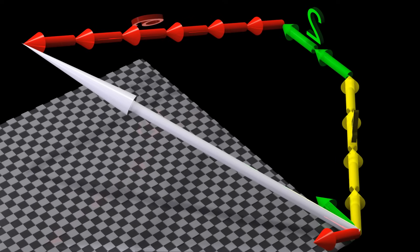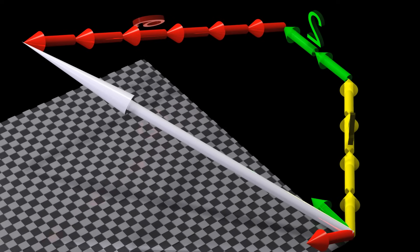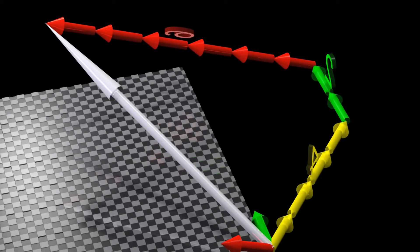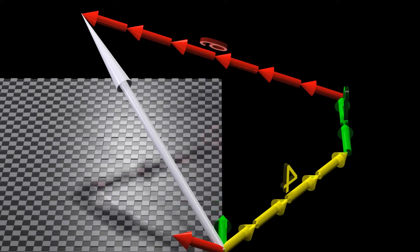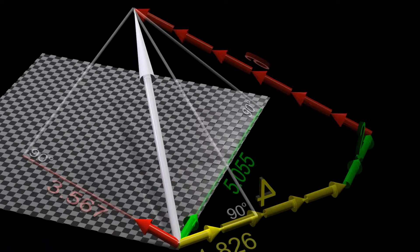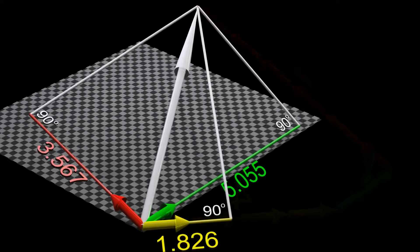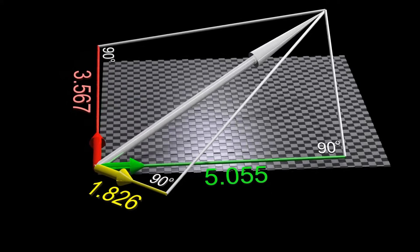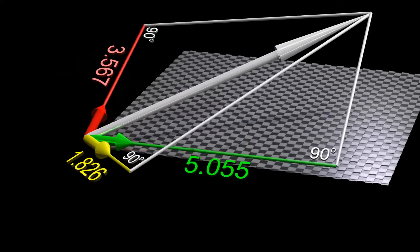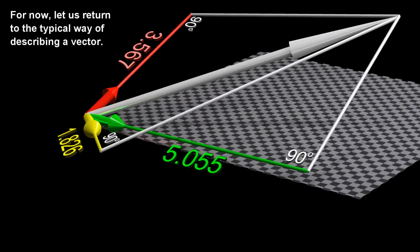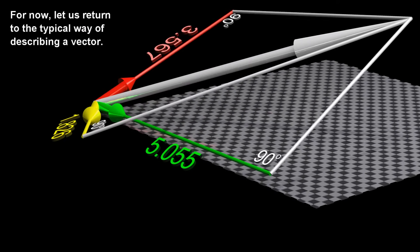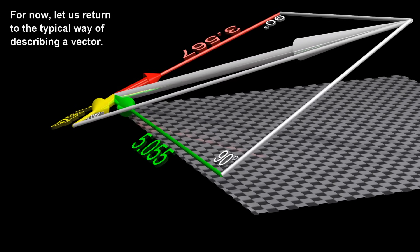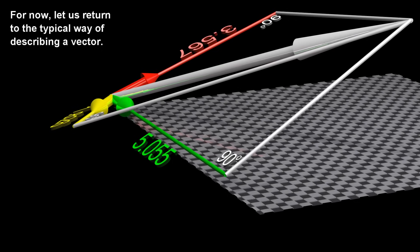This second way is by taking the dot product of the vector with each of the basis vectors. For now, let us return to the typical way of describing a vector.